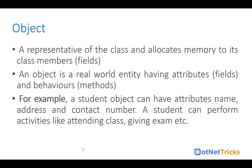For example, we have a student object. A student object can have attributes like name, address, and contact number, and a student can perform activities like attending classes and giving exams. To create this object, we have to create a student class with all the attributes like name, address, and contact number, and in that class you have to add methods like attending class and giving exam. This is all about classes and objects.